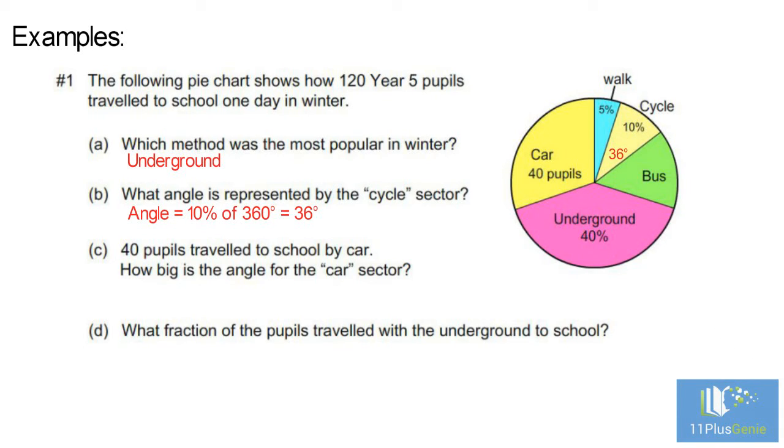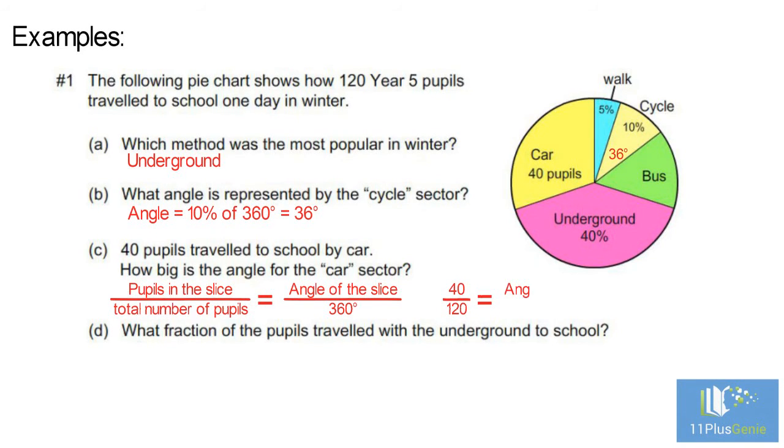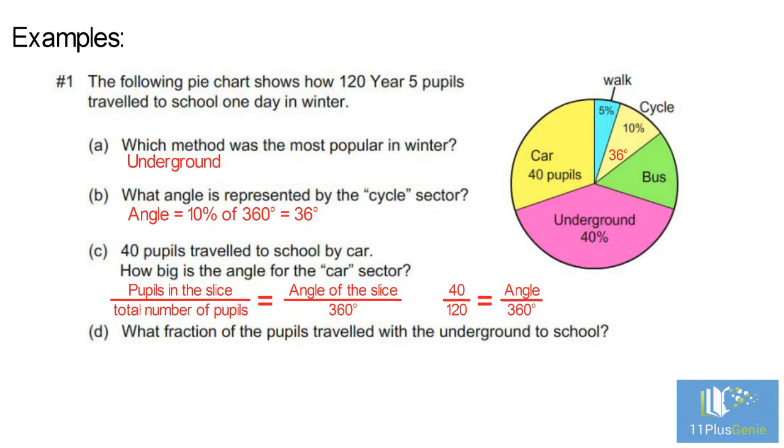C. 40 pupils travel to school by car. How big is the angle for the car sector? We can use the proportionality equation for this question. Pupils in the slice divided by total number of pupils equals angle of the slice divided by 360 degrees. 40 over 120 equals the angle over 360 degrees.